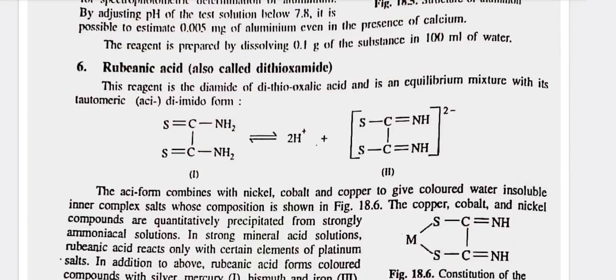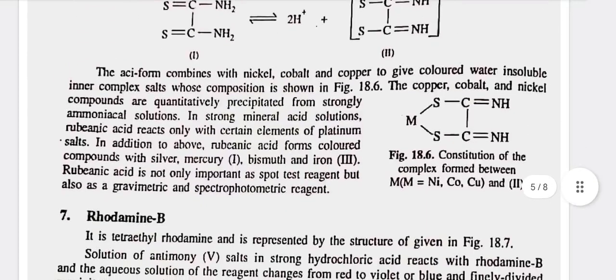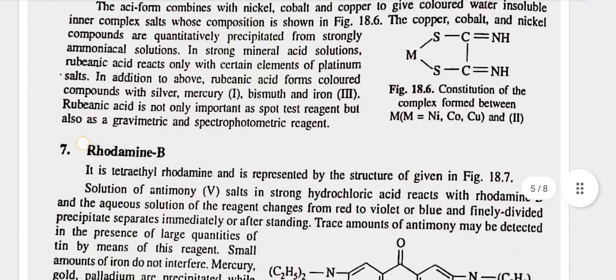Sixth, rubenic acid, also called dithioxamide — this reagent is the diamide of dithioxalic acid and is an equilibrium mixture with its tautomeric acylamido form. The acyl form combines with nickel, cobalt, and copper to give colored water-insoluble inner complex salts, whose composition is shown in figure 18.6. The copper, cobalt, and nickel compounds are quantitatively precipitated from strongly ammoniacal solutions. In strong mineral acid solutions, rubenic acid reacts only with certain elements of the platinum group. In addition, rubenic acid forms colored compounds with silver, mercury, bismuth, and iron. Rubenic acid is important not only as a spot-test reagent, but also as a gravimetric and spectrophotometric reagent.